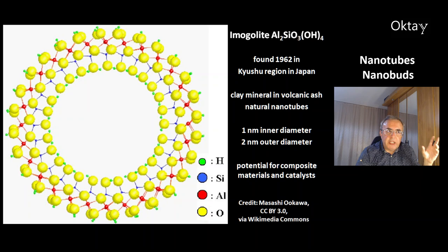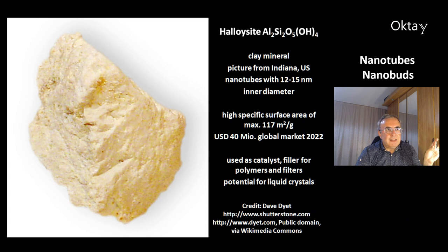This is another example from nature. This is imogolite, aluminum silicate hydroxide, found in the Kyushu region in Japan in the year 1962. This is a component of clay mineral and volcanic ash. These are natural nanotubes. Their inner diameter is 1 nanometer, outer diameter is 2 nanometers. Imogolite has big potential for composite materials and for catalysts.